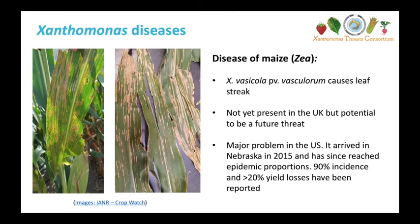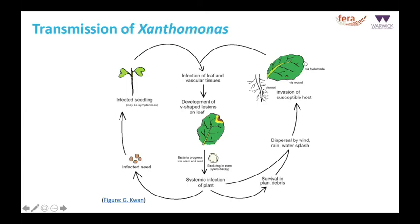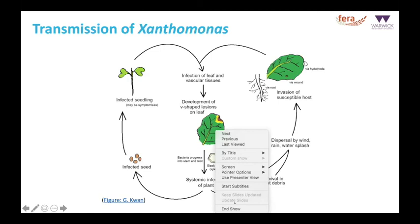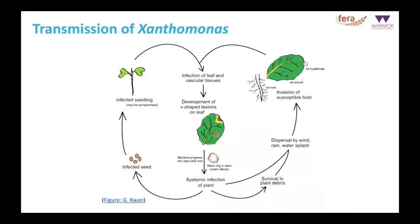There'll be a main focus on Xanthomonas campestris campestris in brassica. So how is Xanthomonas transmitted? Starting in the center of the cycle, if we have an infected leaf with these classical V-shaped lesions, the bacteria can spread to new hosts through dispersal by wind, rain, and water, where it enters the new host through the hydathodes, wounds, or the root. Xanthomonas can survive in leaf debris for up to two years, which is another route of infection. Xanthomonas can also cause systemic infection, moving to the seed-producing tissue, so you can have infected seeds that go on to become new hosts for the disease.